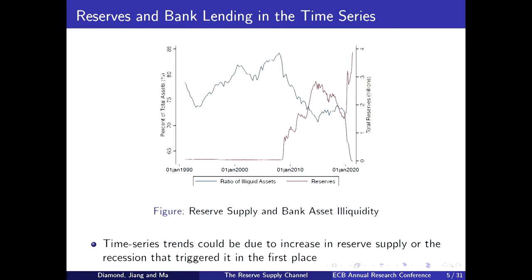As we all know, quantitative easing was not a random policy — it was implemented because there was a recession. So perhaps the contraction in lending reflects the overall recession rather than the policy itself, since loan demand tends to drop in recessions. Although this is preliminary evidence of a crowding-out effect of reserves on bank lending, it is not conclusive because of endogeneity with the business cycle.